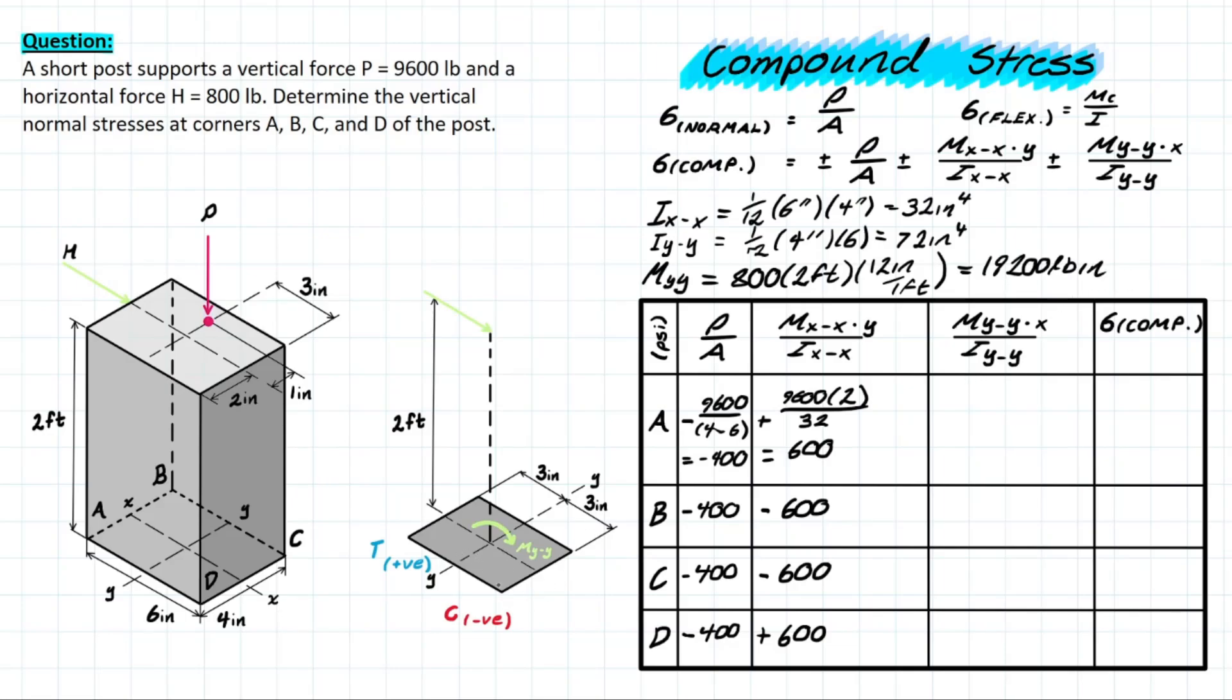And solving this you're going to be left with a value of 19,200 pounds per inch. Now let's do the sign convention once again we have point D and point C which are on the compressive side of the face meaning that we have a negative sign that we're going to put in here and then similarly for A and B we have tensile action here meaning that it's going to be positive for A and B.